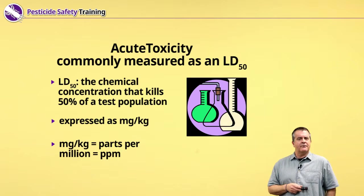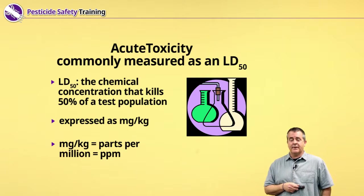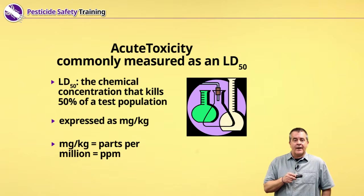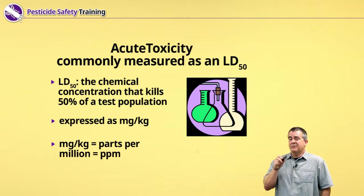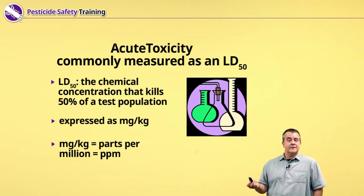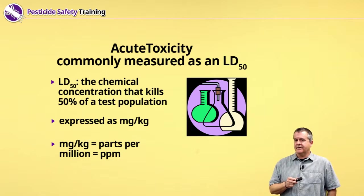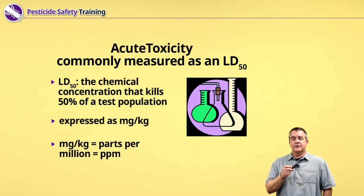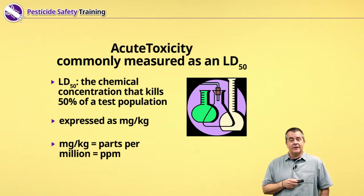Let's put them into some kind of frame of reference. Everybody knows a gram is a small amount of weight. Well, a milligram — it takes 1,000 milligrams even to make a gram. So a milligram is a very tiny amount of weight. A kilogram, on the other hand, is just over 2 pounds. If a concentration of something is 10 milligrams per kilogram, another way to say that is 10 parts per million, or 10 ppm.